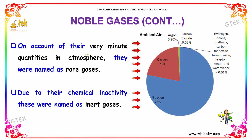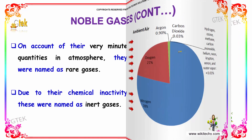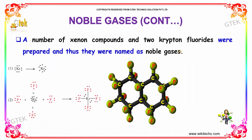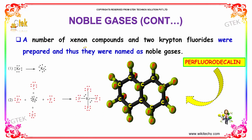On account of their very minor quantities in the atmosphere, they were named as rare gases. Due to their chemical inactivity, they were named as inert gases. A number of Xenon compounds and two Krypton fluorides were prepared, and thus they were named as noble gases.